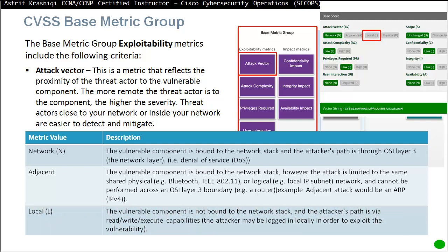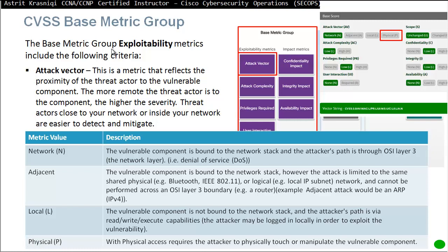Local: the vulnerable component is not bound to the network stack and the attacker path is via read, write, execute capabilities. The attacker might be logged in locally in order to exploit the vulnerability — they are not on the network and are actually sitting at the computer, so they don't have to go through the network stack to attack. Physical: requires the attacker to physically touch or manipulate the vulnerable component.